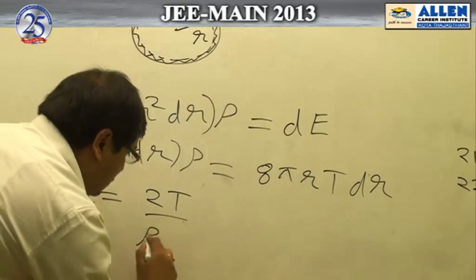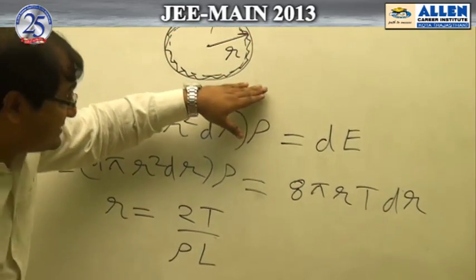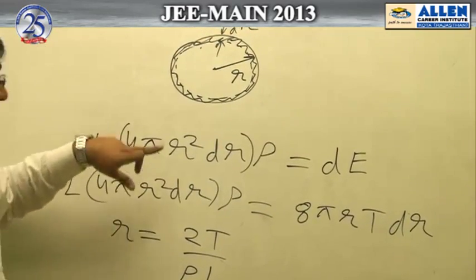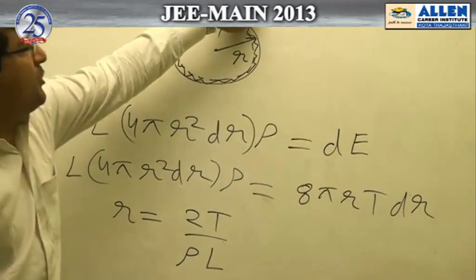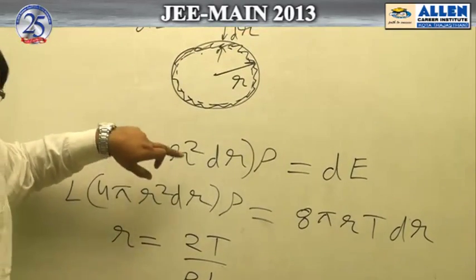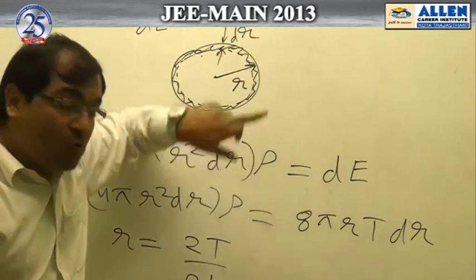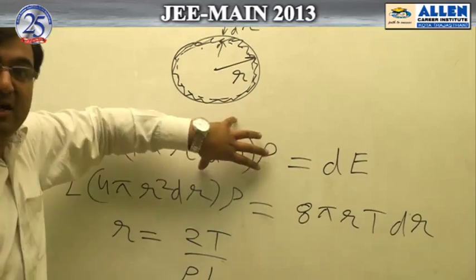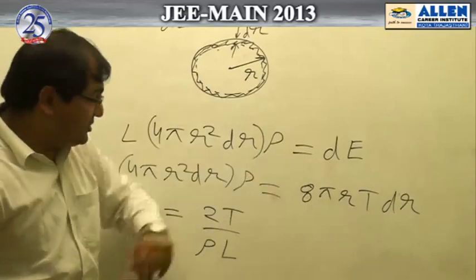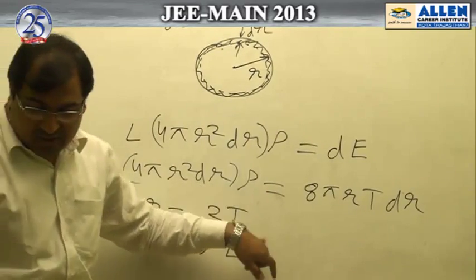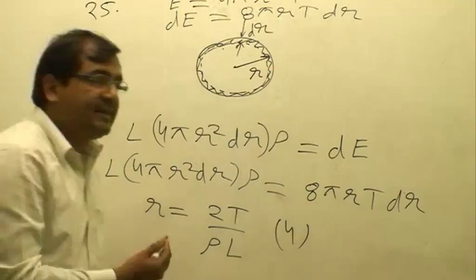Solving the equation gives the radius as 2T/ρL. This is the minimum radius because if the radius is larger than this, the requirement of heat will be more than what can be supplied by the change in surface energy — you have r² on one side and only r¹ on the other. So this is the minimum radius for evaporation, making option 4 the correct answer.